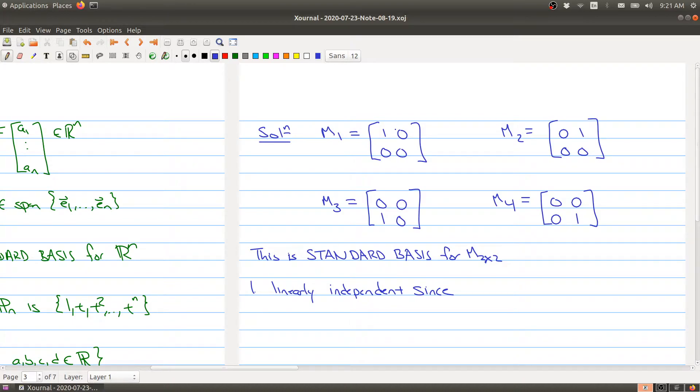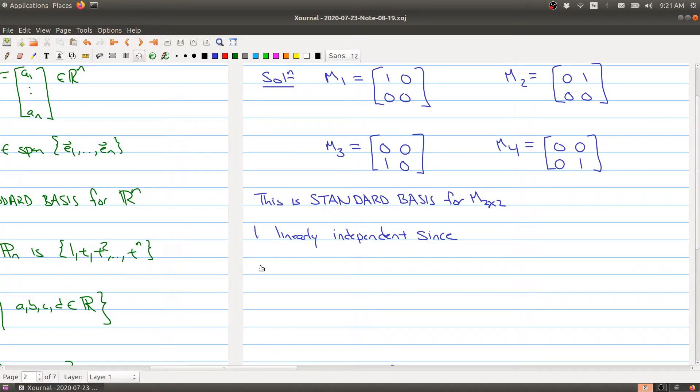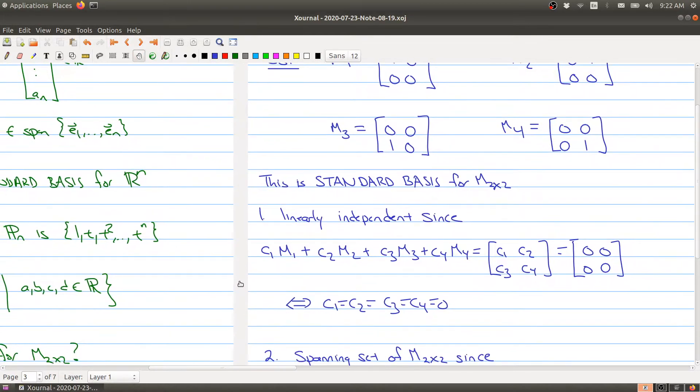Well it's linearly independent since if you take any linear combination, say that we're looking at C1 times the first matrix plus C2 times the second matrix plus C3 times the third plus C4 times the fourth matrix. If you multiply that all out you would get [C1, C2; C3, C4]. And what we want to know is when does this thing equal the zero matrix? And that will happen if and only if C1, C2, C3, C4 equals zero. So only when we have the trivial solution.